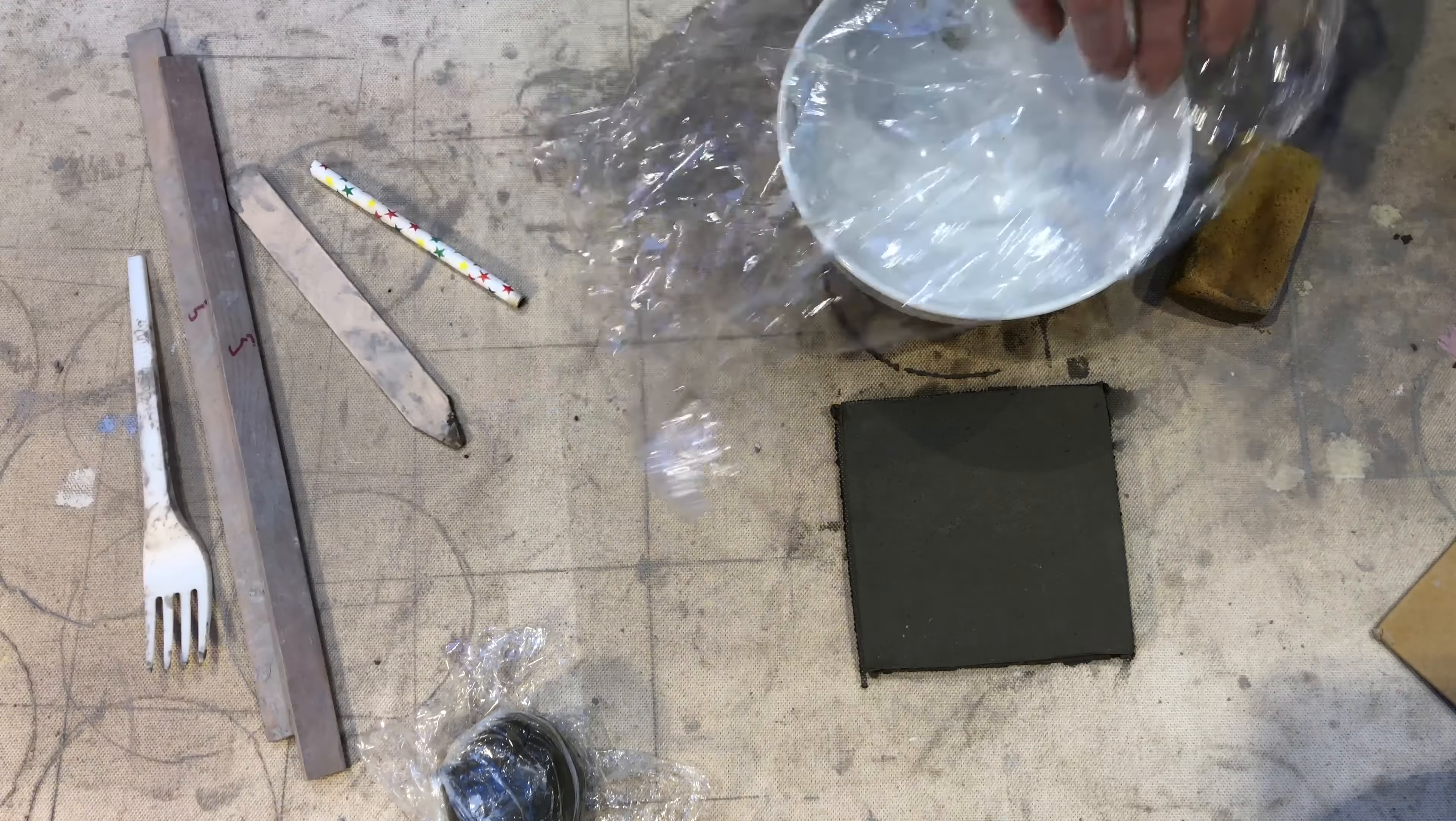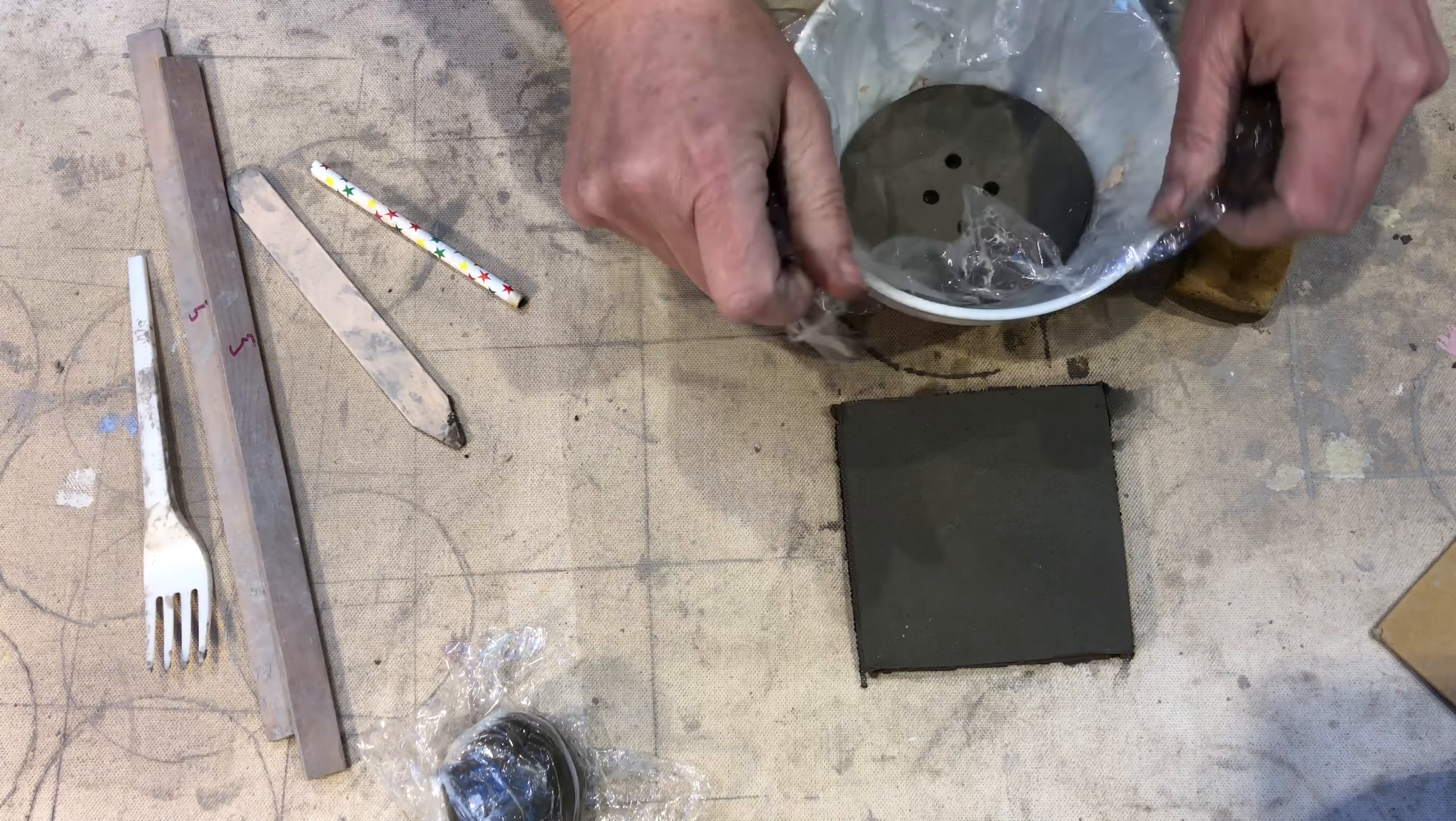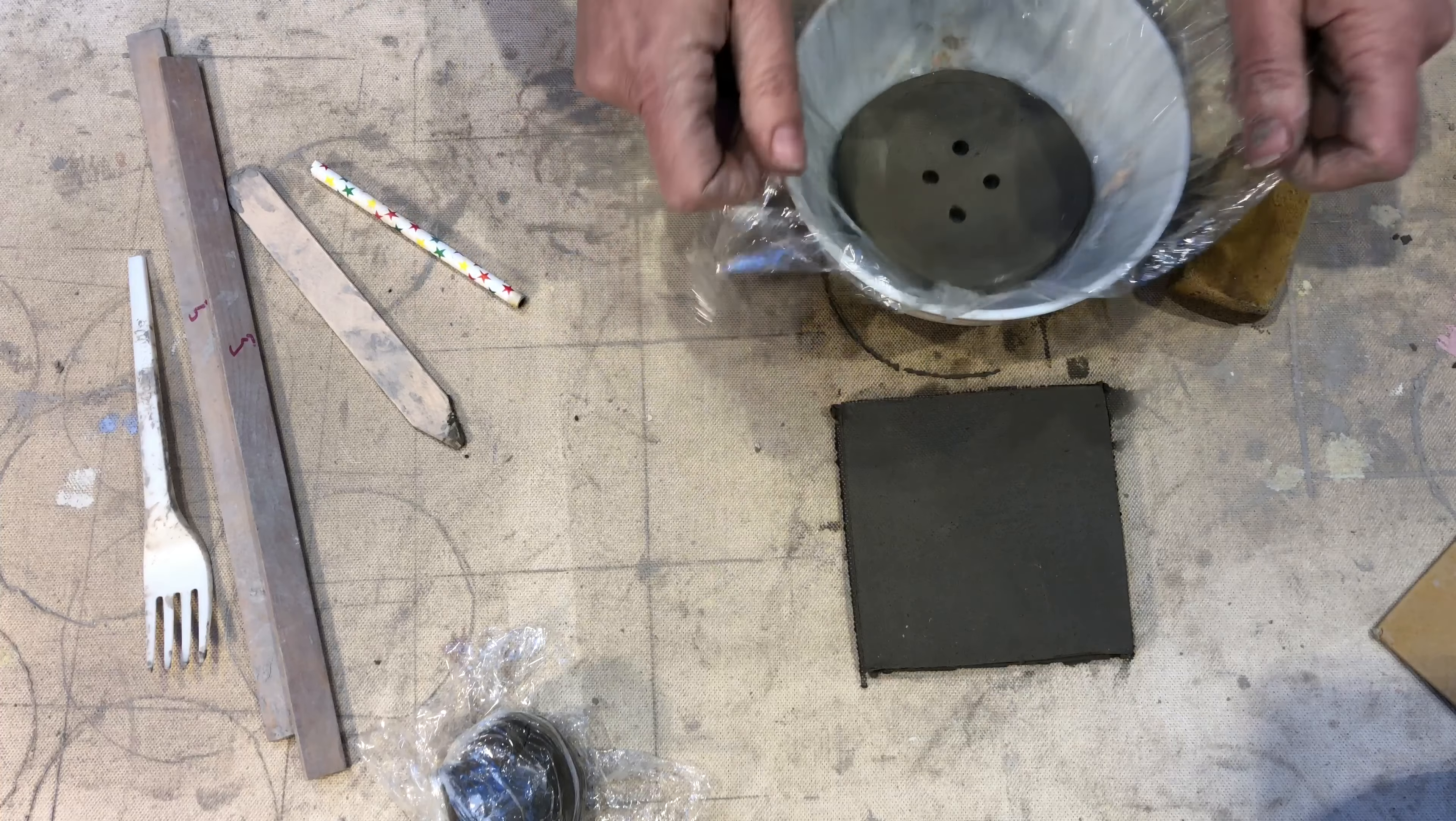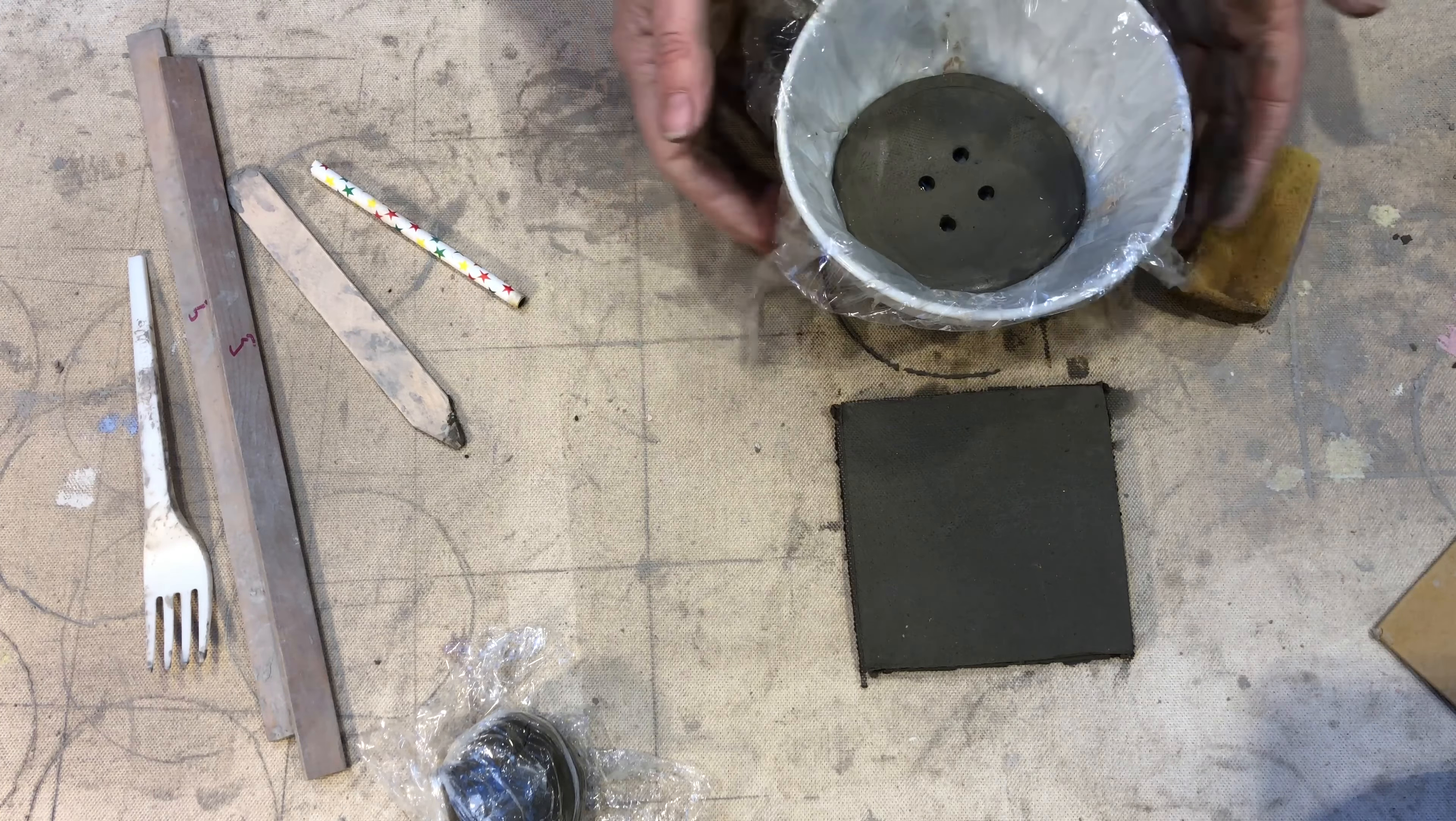You want to get yourself a pasta bowl. I've got one here with high sides and then I line it with cling film and plop my piece of clay in. And I'm going to leave it overnight so it dries with a slightly curved shape to it.